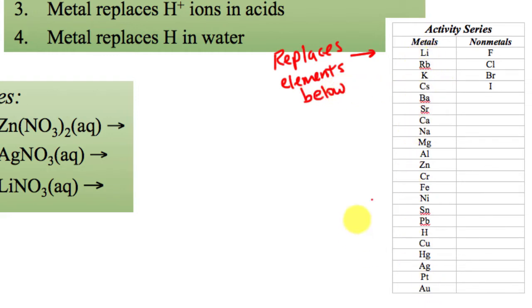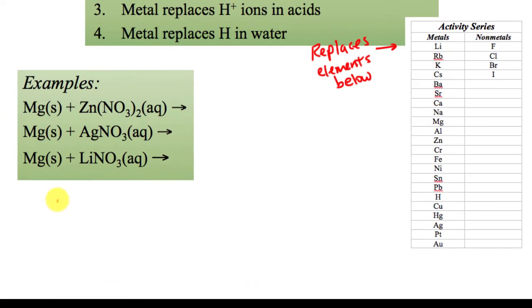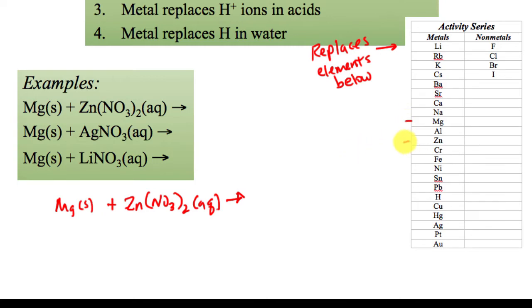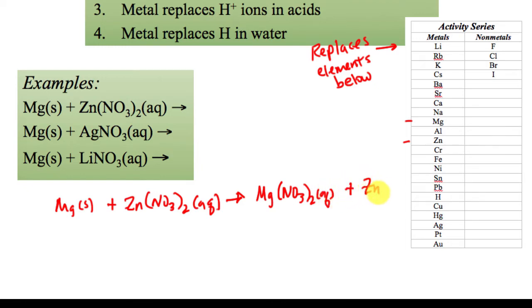So lithium replaces everything below it; gold cannot replace everything. If I look at the reaction of magnesium solid reacting with zinc nitrate, I want to see if the reaction will happen. I compare zinc and magnesium on the activity series. Magnesium is above zinc, so it replaces elements below — magnesium can replace everything from aluminum all the way down to gold, so it can replace zinc. I write magnesium taking the place of zinc, this becomes magnesium nitrate aqueous, and solid zinc comes out of solution. Then of course you'd go back and balance it.